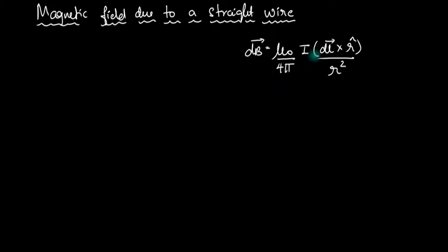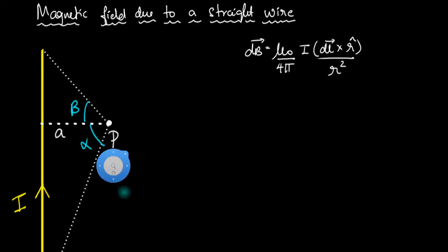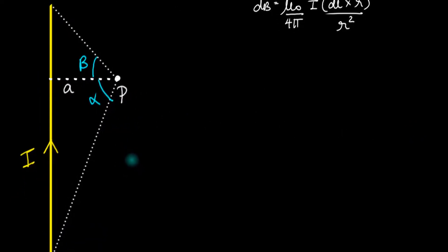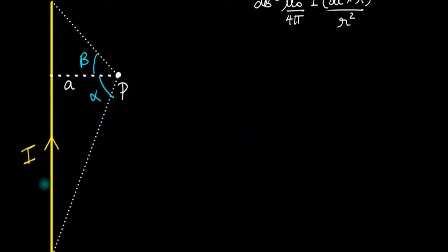Today we will apply the Biot-Savart law, the law that allows us to calculate the strength of the magnetic field due to a current carrying wire, and we'll calculate the magnetic field due to a straight wire. Imagine you have a straight wire which has a length as shown, and we want to calculate the magnetic field at this point P, which is at some distance a.